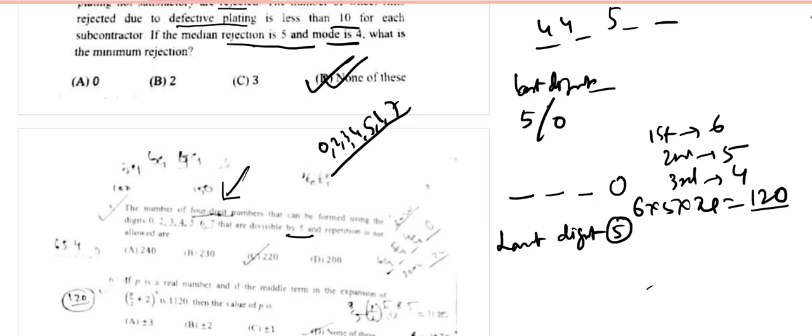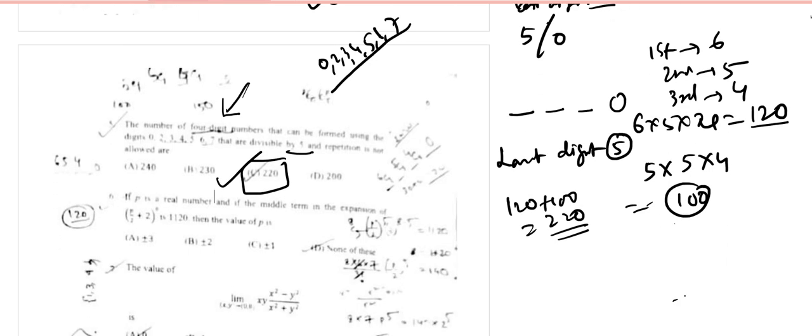Now if last digit is 5, the first digit can be filled in 5 ways, second digit can be filled in another 5 ways, and the third digit can be filled in 4 ways. So this time it will be 100 different ways. The total is 120 + 100 = 220. We can see that the answer is C.